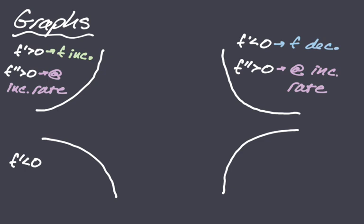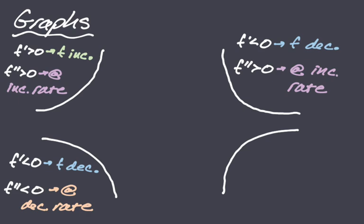The next curve is decreasing, so f prime is less than zero. This curve is concave down, therefore f double prime is less than zero, so we will say it is at a decreasing rate. Whether the function is increasing or decreasing, if f double prime is less than zero we say it is at a decreasing rate.